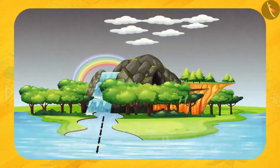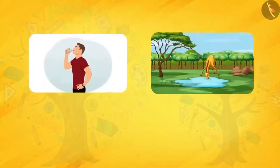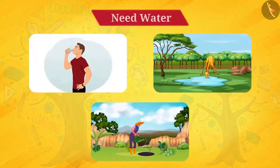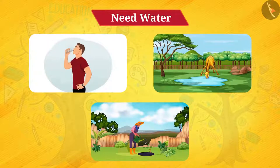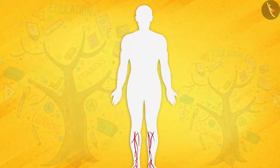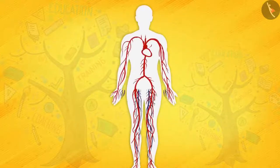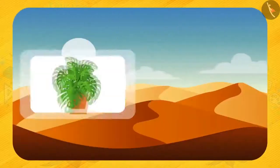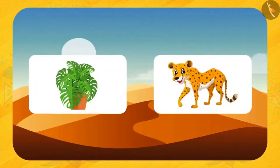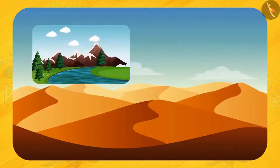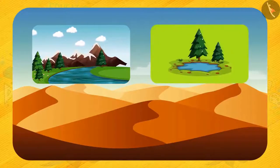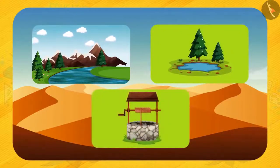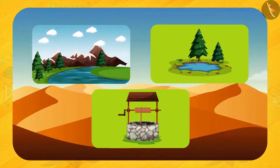It is well known that humans, animals, and plants all need water. Water is essential for all living organisms as it is required for all cellular reactions occurring inside the body. We see very few plants and animals in the desert. Have you ever thought why? Because sources of water like lakes, rivers, etc. are not found in the desert. So now you can understand how important water is. Water decides the biodiversity of a region.